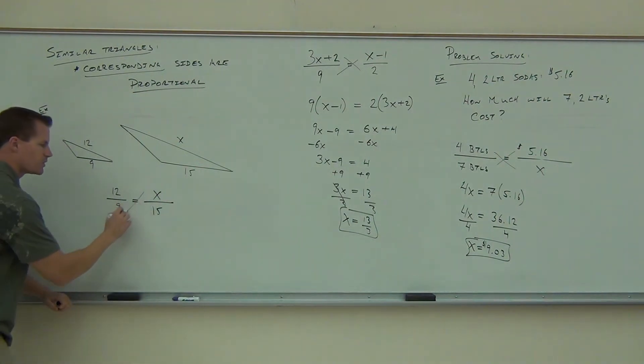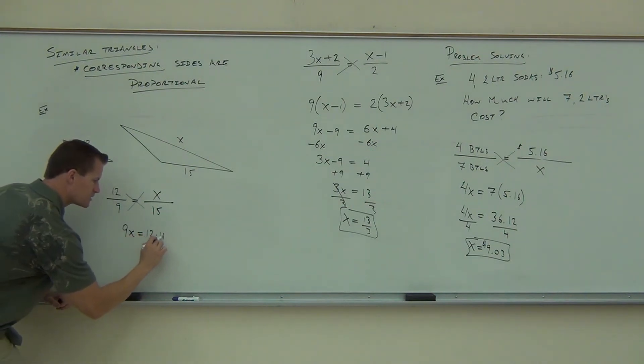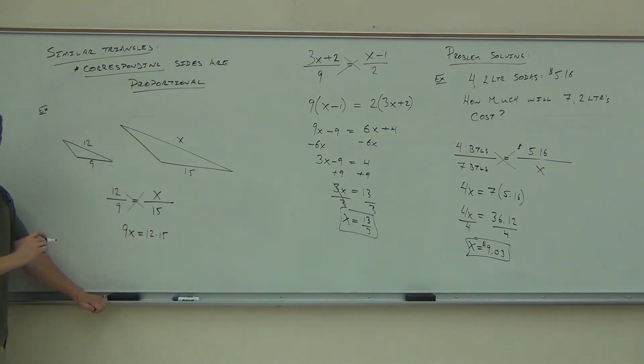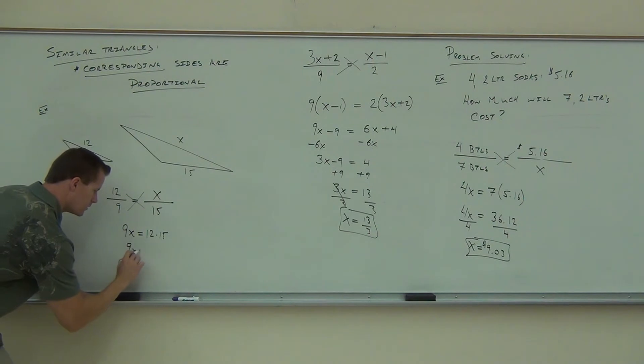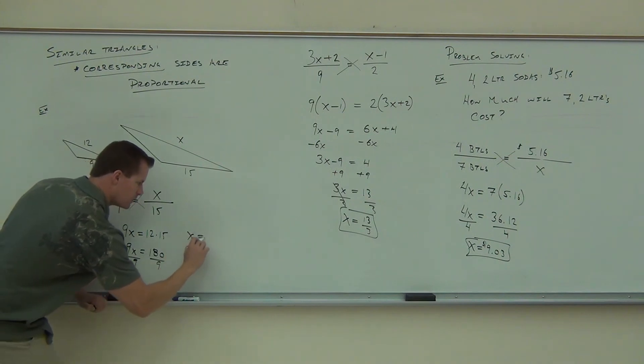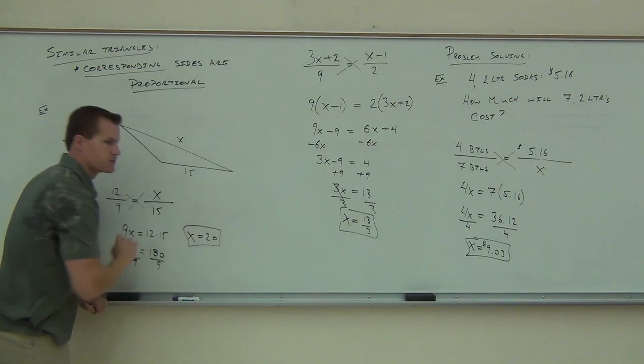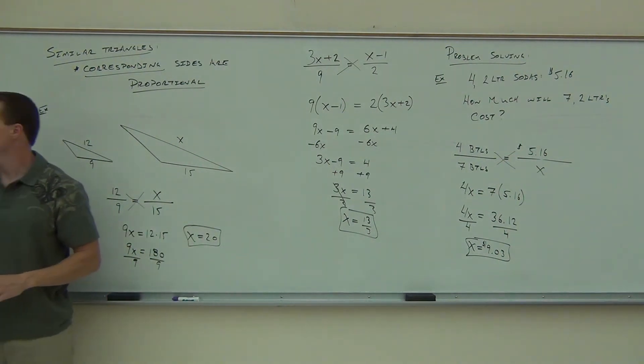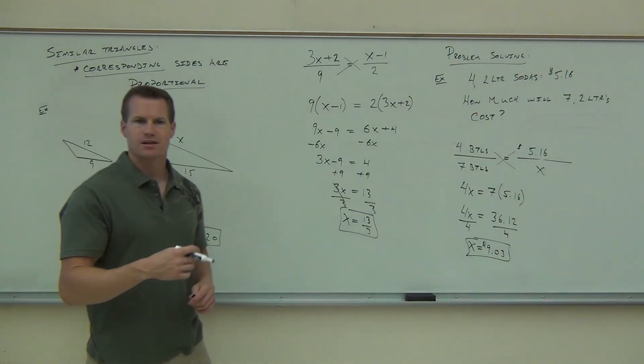If we cross multiply, that's no surprise, right? We can cross multiply these proportions. We get 9X equals 12 times 15. Someone help me out with 12 times 15. 180. 180? 180. That makes it nice, because when we divide by 9, we're going to get... And we find a missing side to a triangle. Kind of nice. Not too bad, right? As long as you remember how to set up that proportion.